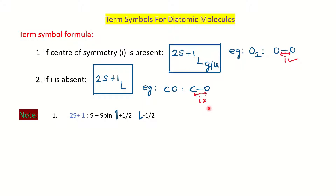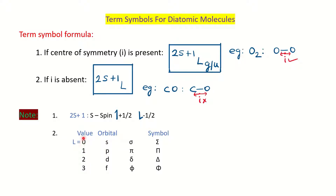We have a few points to keep in mind. For calculating 2S+1 (the multiplicity), S is the spin — each electron has a spin of +½ or −½. For the L value, the orbitals s, p, d, f correspond to symbols capital Σ, Π, Δ, and Φ. The L value for the s orbital (Σ) is 0, for Π it is 1, for Δ (d orbital) it is 2, and for Φ (f orbital) it is 3. Keeping the shape of the orbital in mind, we can decide the symbol with respect to the L value.